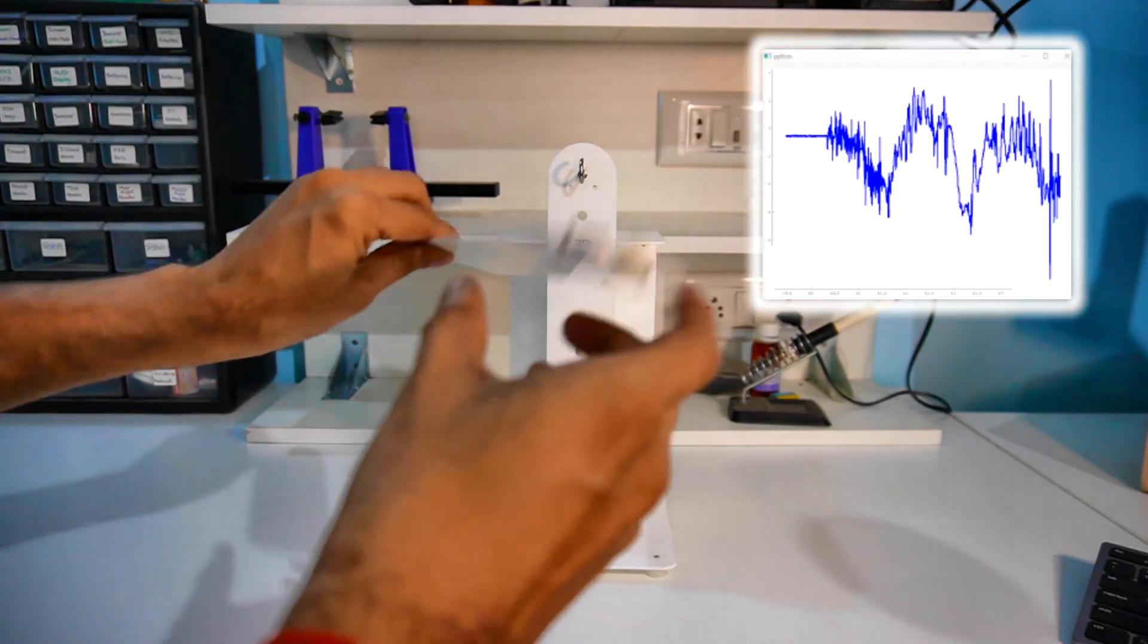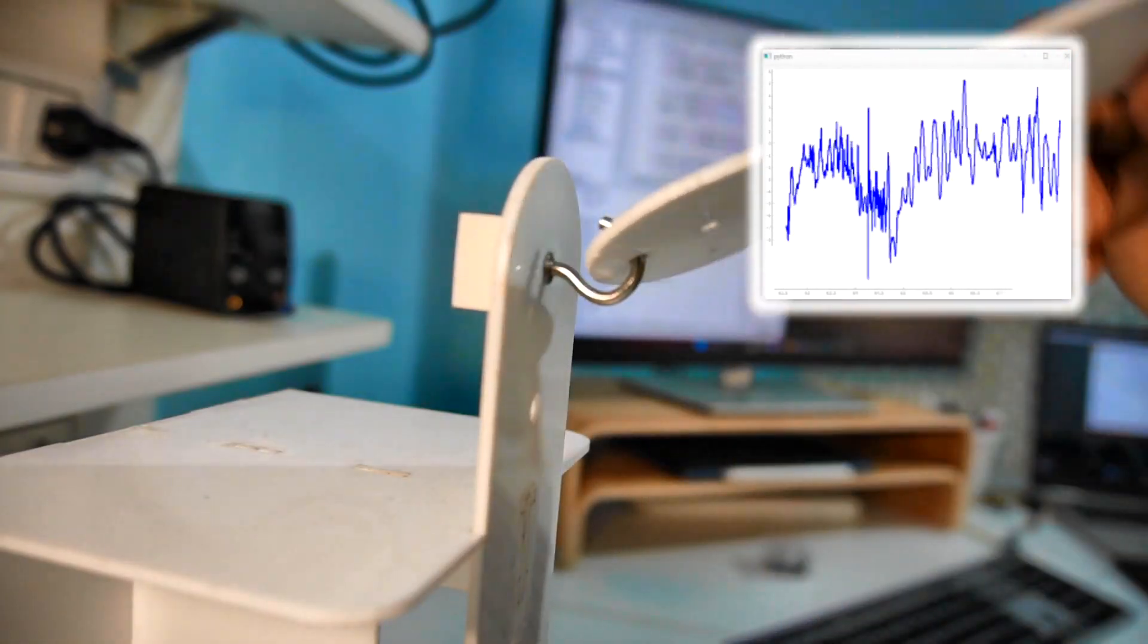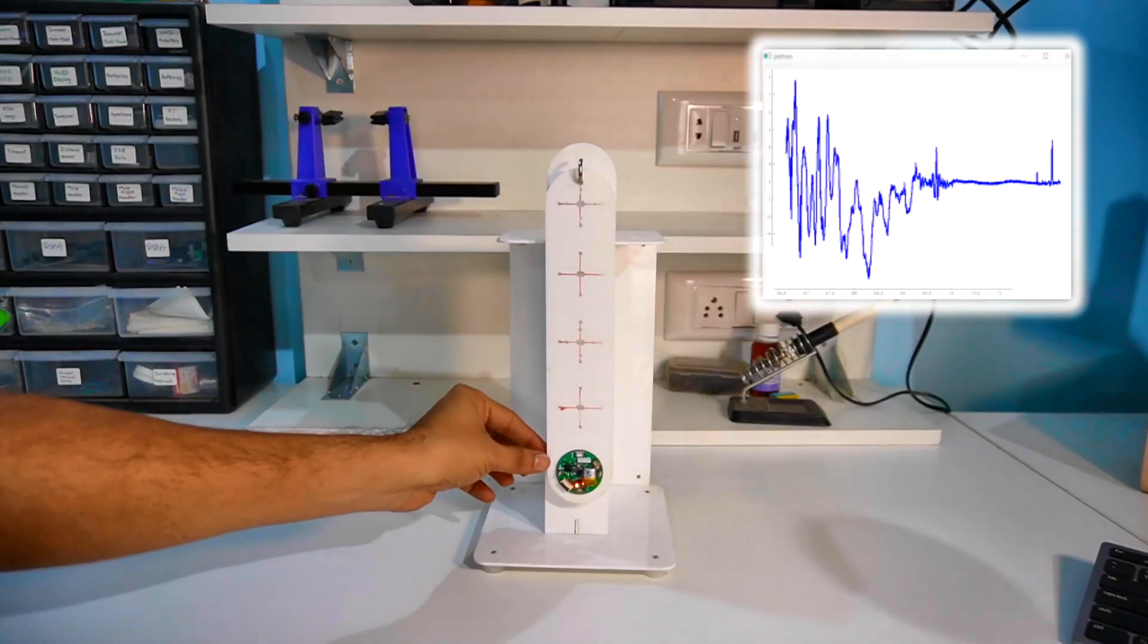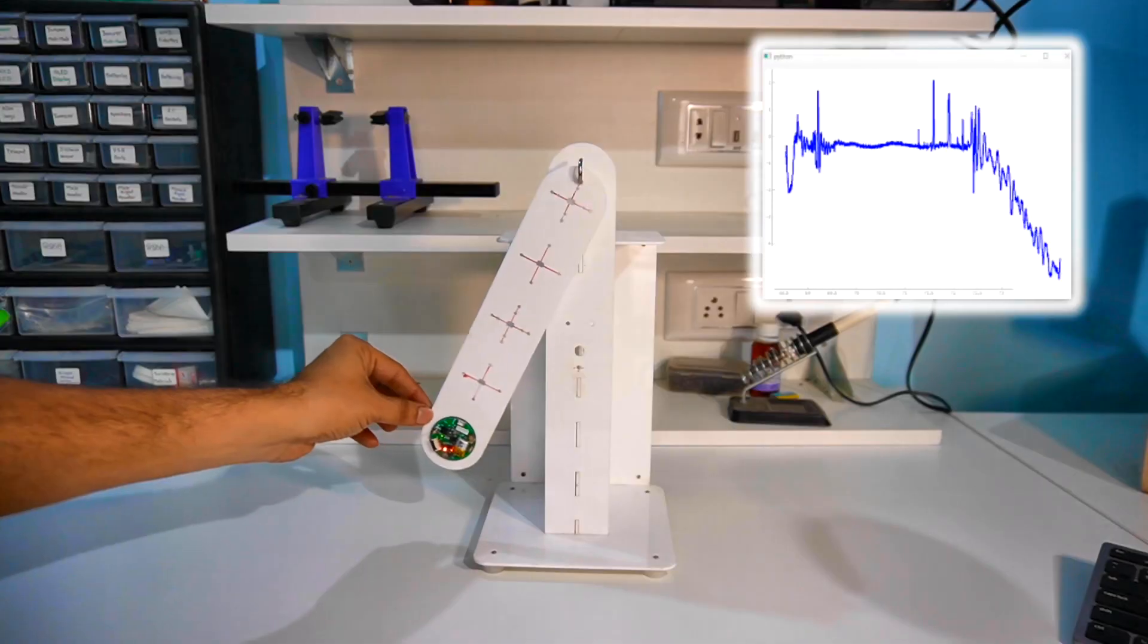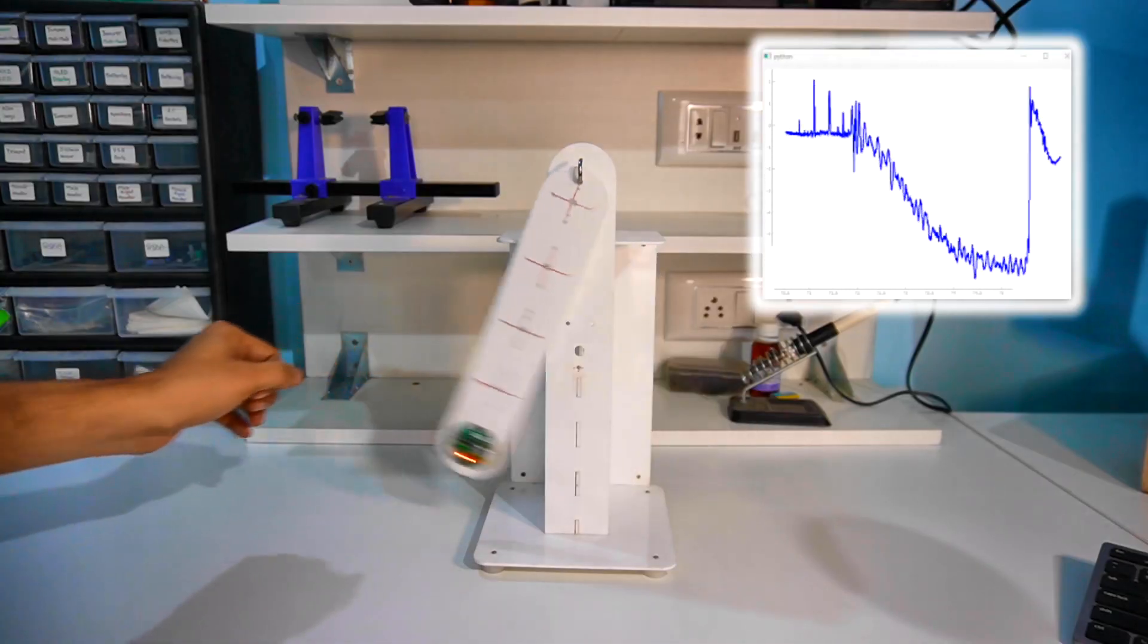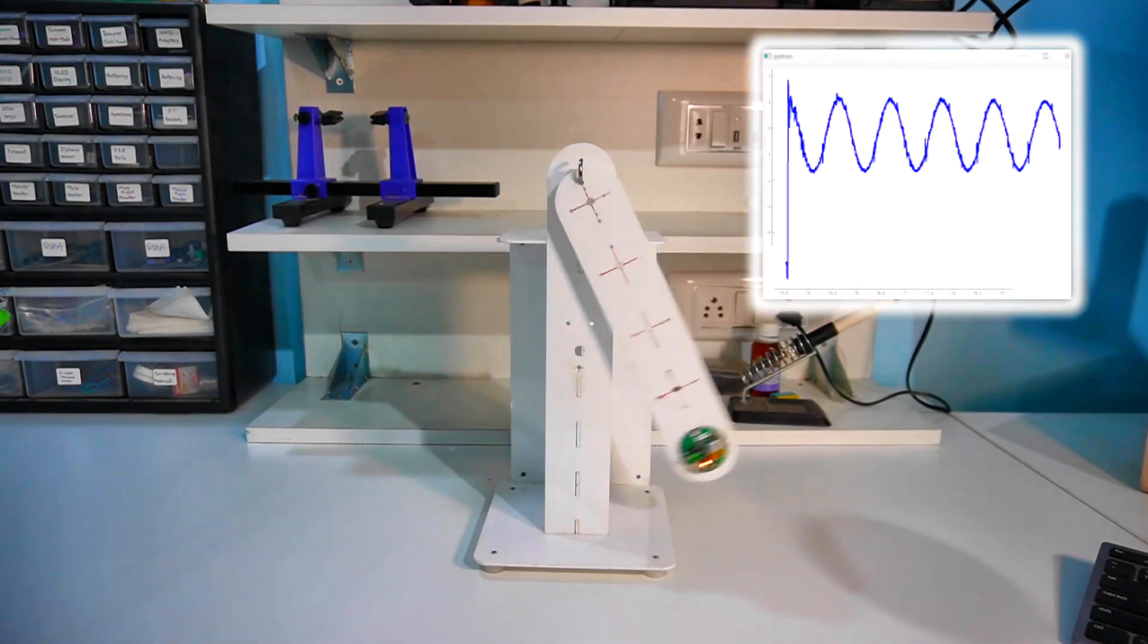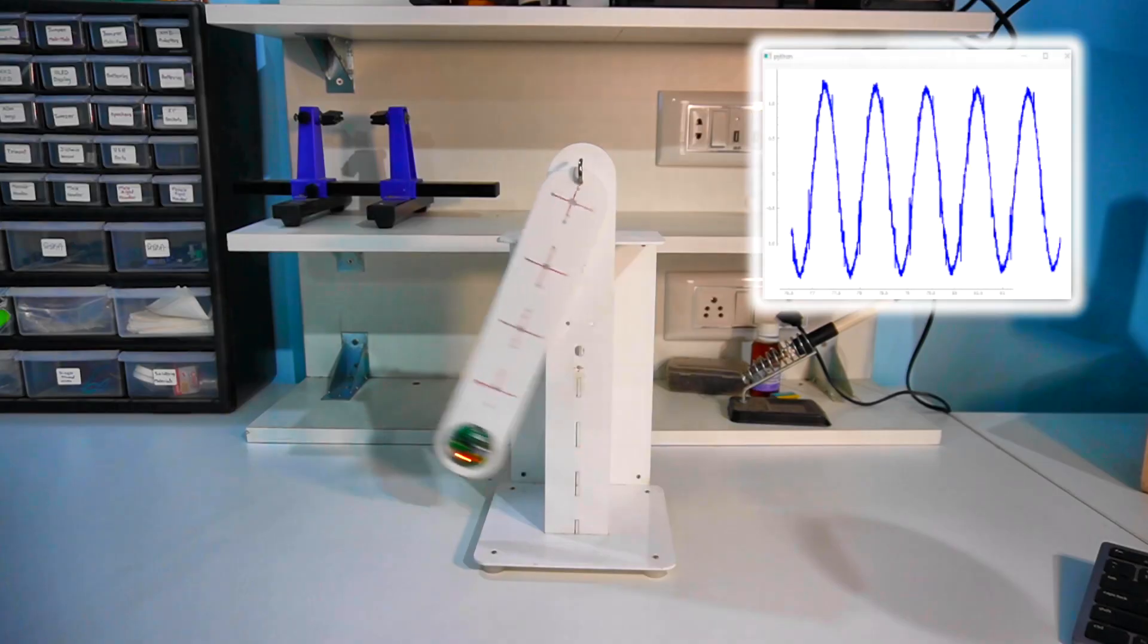We'll start with a classic simple harmonic motion. The pendulum is in its equilibrium position. Let's displace it to a certain height, and release. The oscillations have begun. We can visualize the acceleration as the pendulum swings. But the sensor data seems a bit noisy.